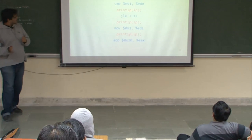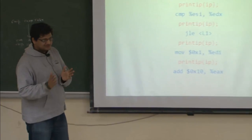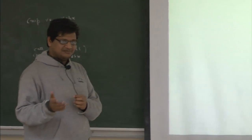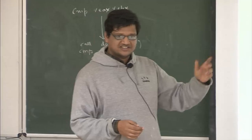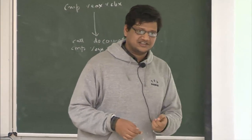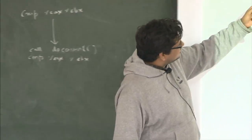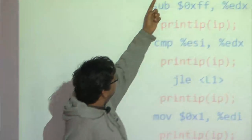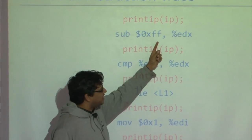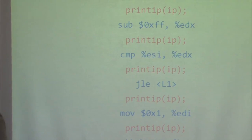Now let's look at another example — printing the instruction trace. By instruction trace, we mean the instruction address (instruction pointer) for each instruction that is executed. We insert a call to a printIP function passing IP as an input argument.